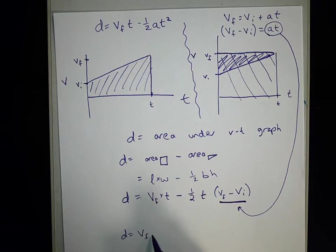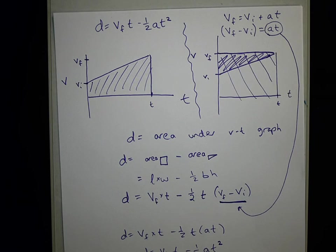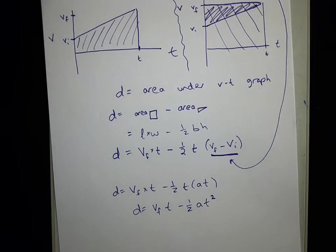This gives me VF times T minus a half times T. And then instead of VF minus VI, AT. So our big final answer is VF minus a half. We put those two T's together and call it T squared. And there's our third derived equation for uniformly accelerated motion or constant acceleration of motion.